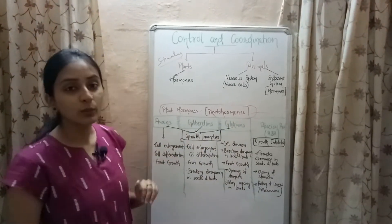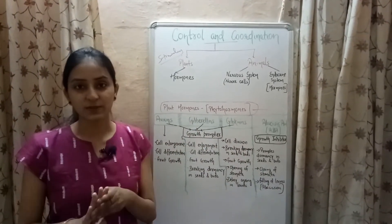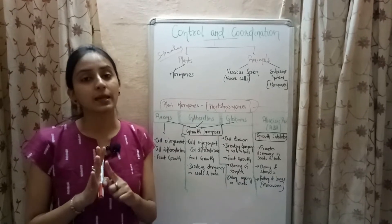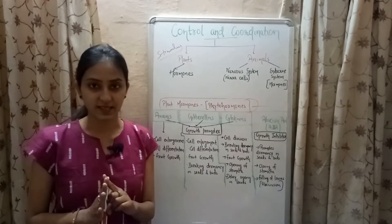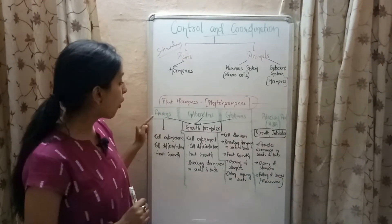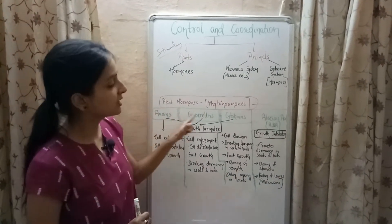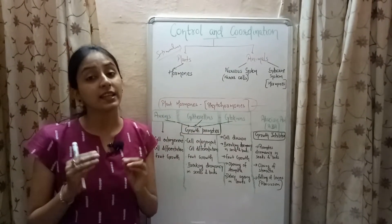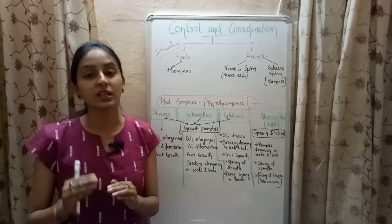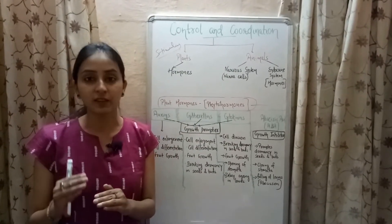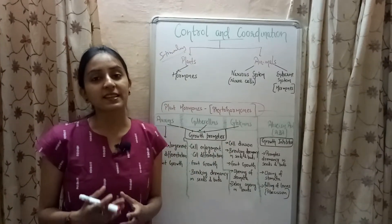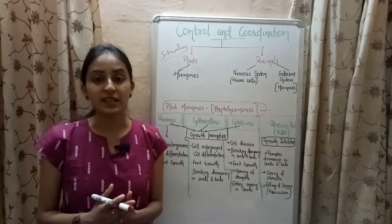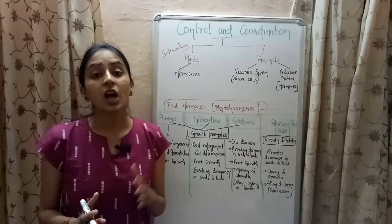To summarize plant hormones: there are four types — auxins, gibberellins, cytokinins, and abscisic acid. Auxins, gibberellins, and cytokinins are growth promoters that help promote the growth of different parts of the plant. Abscisic acid is a growth inhibitor that inhibits plant growth.